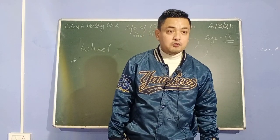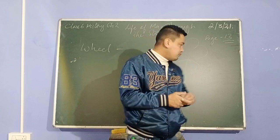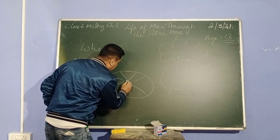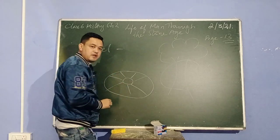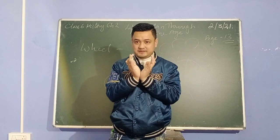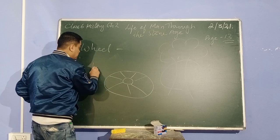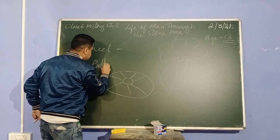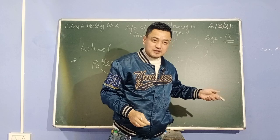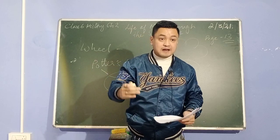It appears that the wheel was first used for making pottery. Potters use a wheel — they spin it, place mud on top, and shape it into a pot using their hands. This is known as a potter's wheel. When they invented the wheel, they could make more pots in a faster and better way.